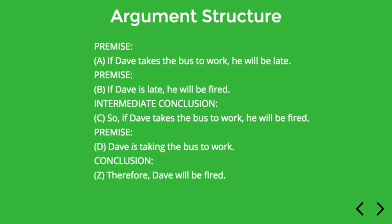Now we get to D, and the person presenting this argument offers another premise. D — Dave is taking the bus to work — is an independent piece of information which can't be inferred from any of the previous statements. So it's simply a premise, even though it comes a little bit later in the argument. And then finally the conclusion, 'therefore Dave will be fired,' is really connecting the information in C and D. It's a result of inferential steps on C and D, and it's also the main point of the argument. So this is actually the conclusion of the argument.